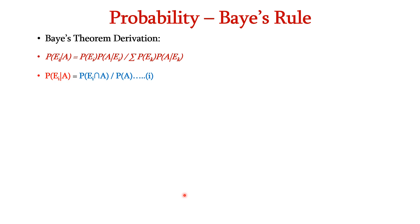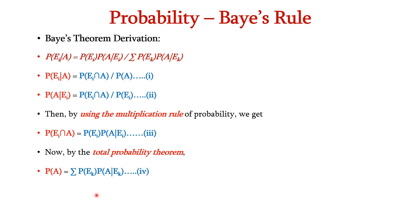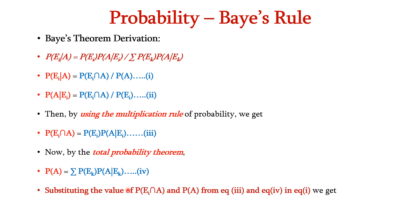Let us derive this equation. We can write P(Ei given A) as P(Ei intersection A) divided by P(A). Likewise, P(A given Ei) equals P(Ei intersection A) divided by P(Ei). By using the multiplication rule, P(Ei intersection A) equals P(Ei) times P(A given Ei). By the total probability theorem, P(A) equals summation of P(Ek) times P(A given Ek). Substituting these into the first equation gives P(Ei given A) equals P(Ei) times P(A given Ei) divided by summation of P(Ek) times P(A given Ek), which is the Bayes' theorem equation.